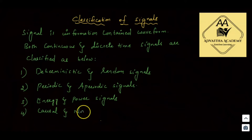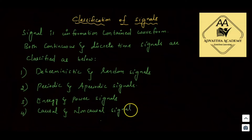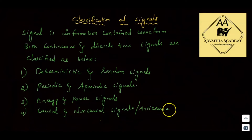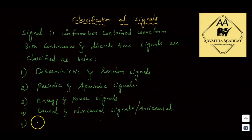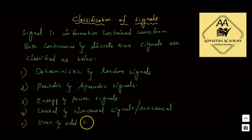Fourth classification: causal and non-causal signals — and also anticausal. Fifth classification: even and odd signals. So, we have five classifications of signals, and we will discuss them one by one.